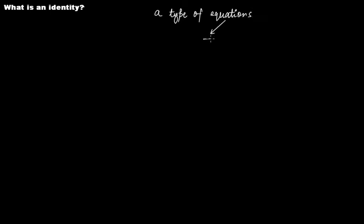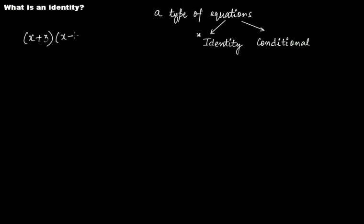Let's talk about what is an identity in mathematics. An identity is a type of equation. Equations can broadly be categorized in two types: one is identity and another one is conditional. Now if you take an algebraic expression (x + 3) multiplied by (x + 1), this is an algebraic expression — because you don't have any equal sign here and you don't have any other expression on the right hand side.